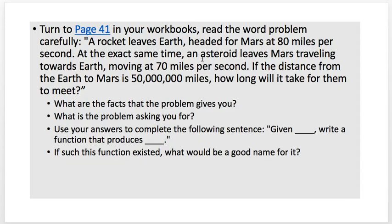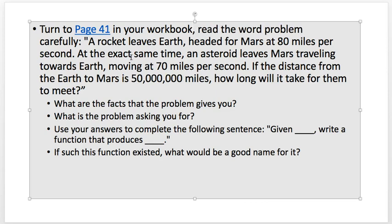Turn to page 41 in your workbook and read the word problem. A rocket leaves Earth headed for Mars at 80 miles per second. At the exact same time, an asteroid leaves Mars traveling towards Earth at 70 miles per second. If the distance from Earth to Mars is 50 million miles, how long will it take them to meet? There's only one extra part in this. Let's walk through the design recipe.